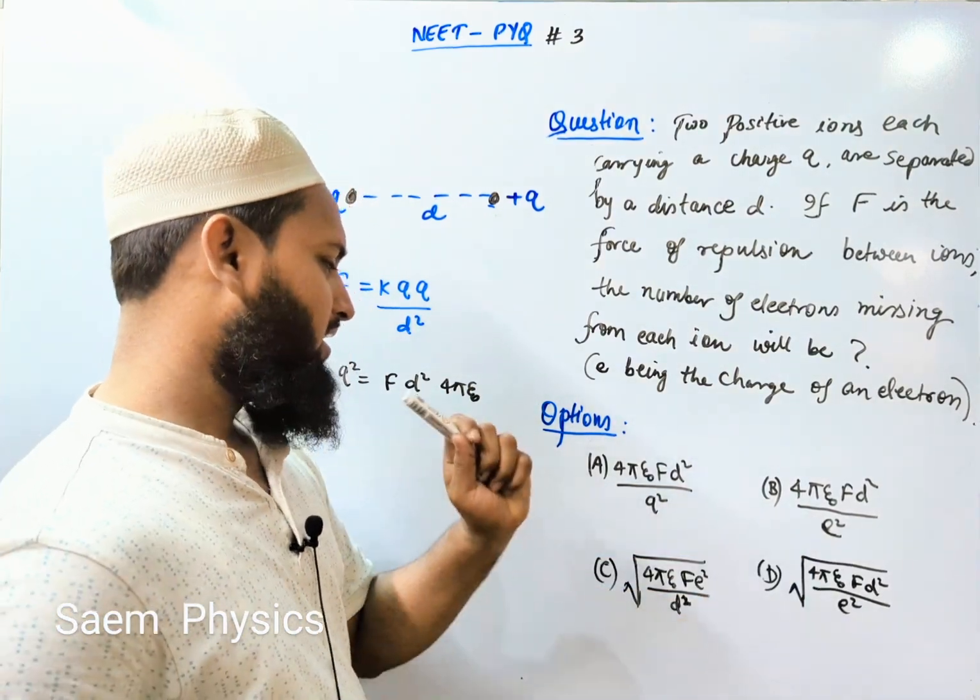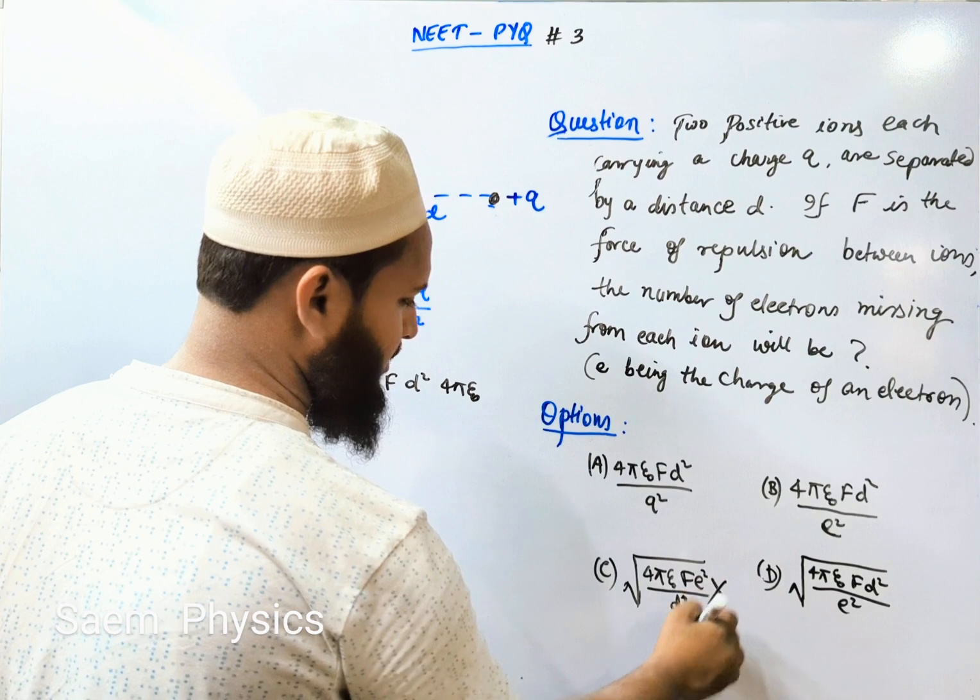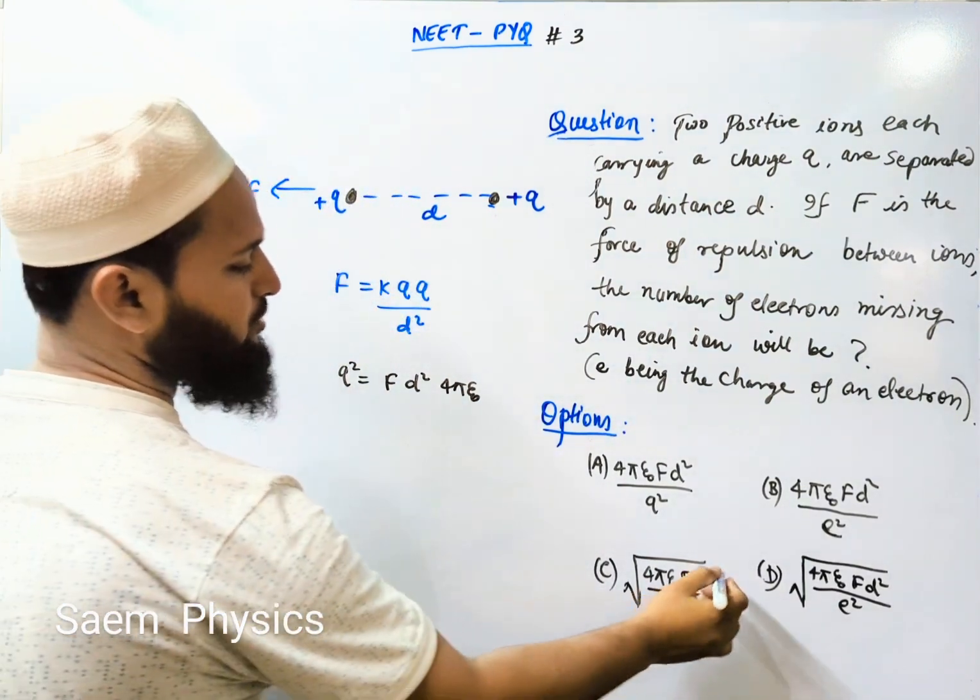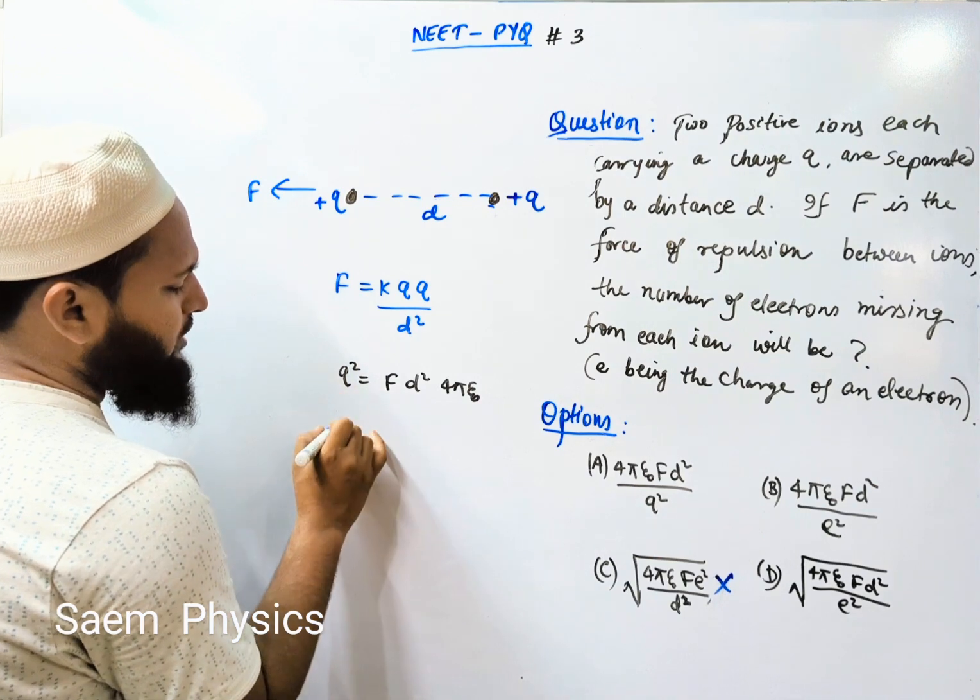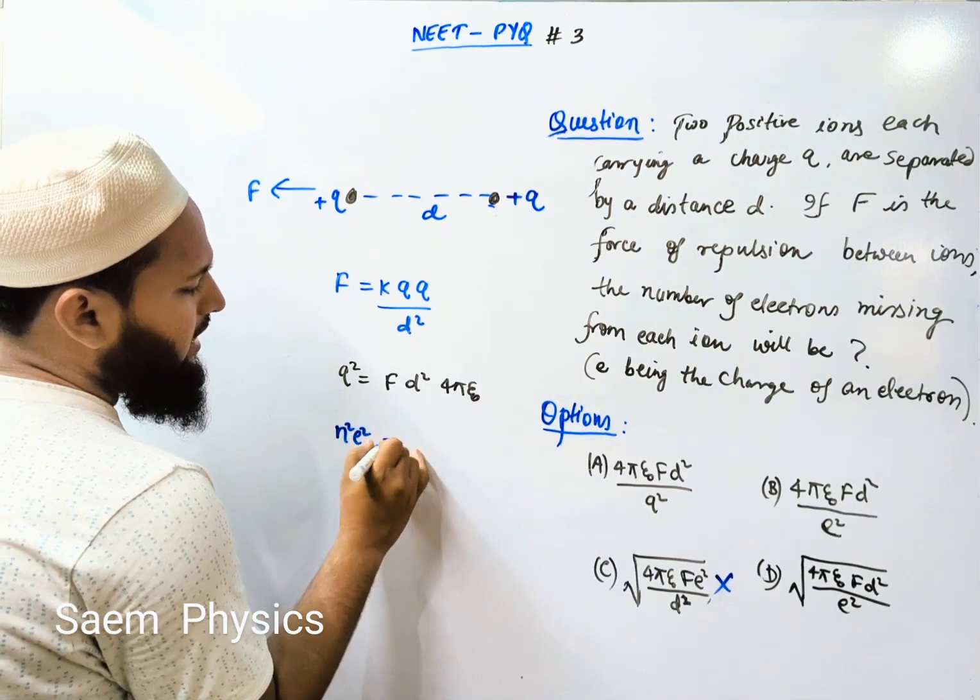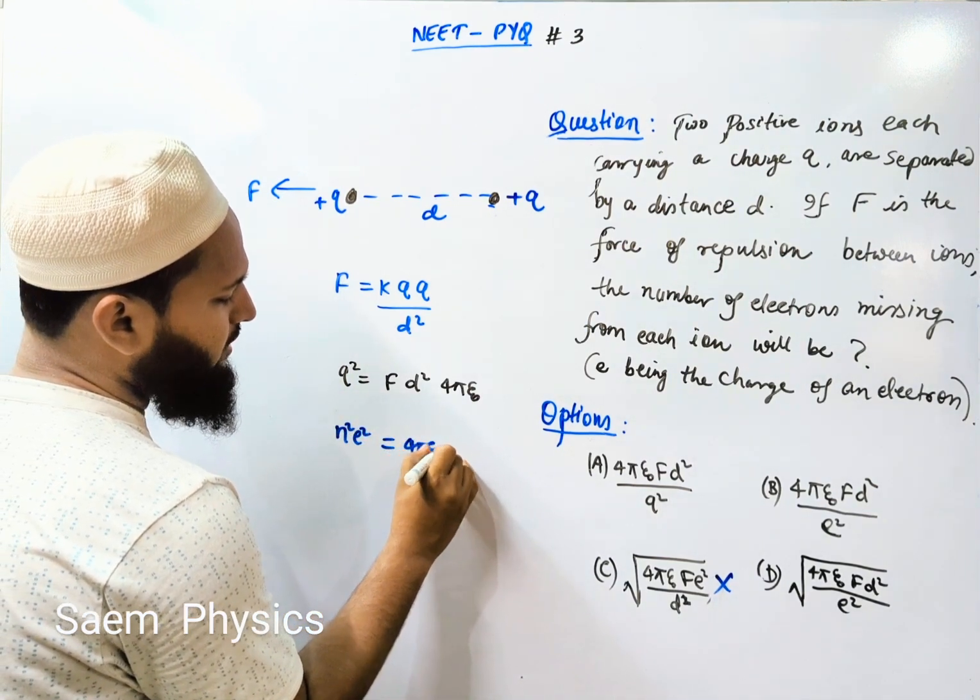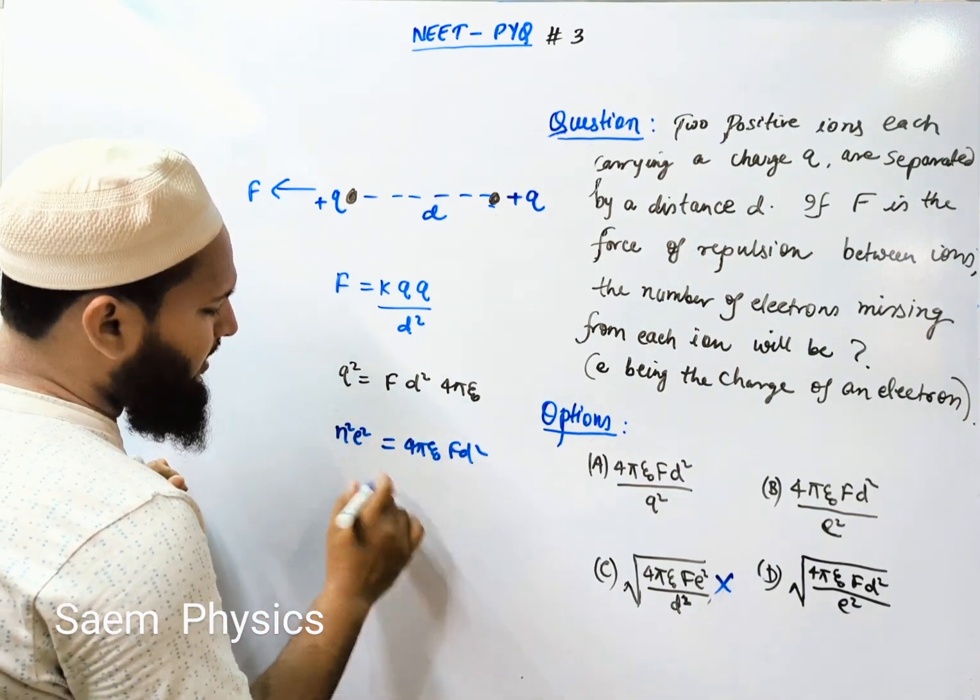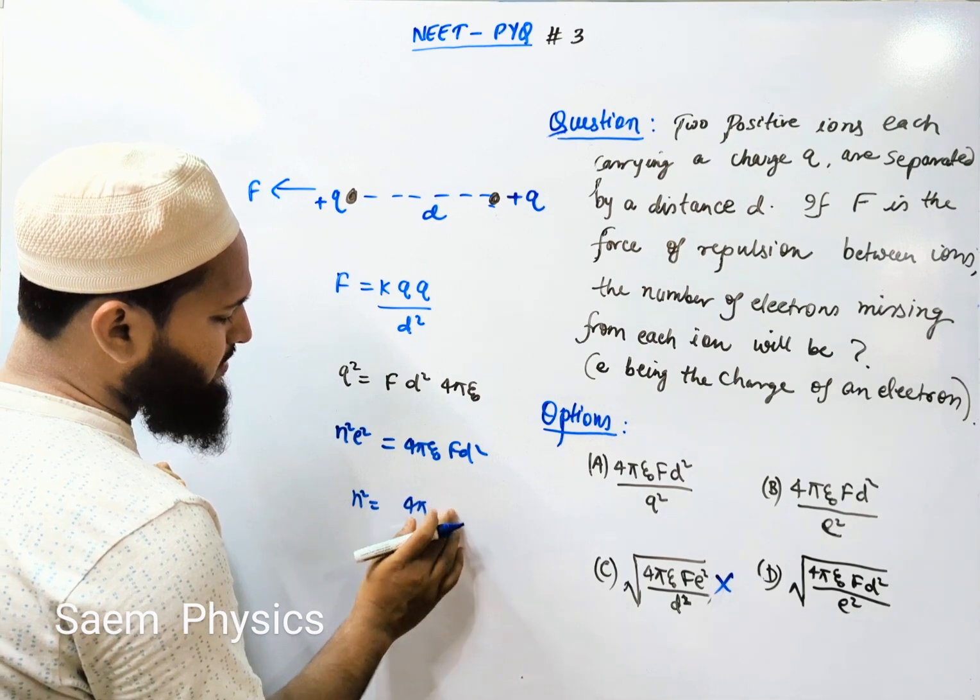Yeh option galat ho gayi, chalo ab aage badhte hain. Bacha teen option hamara. Q squared by n is four pi epsilon F D squared - hume n nikalna hai. Nahi nikalna hai, nikalna hai chalo.